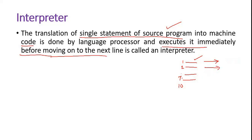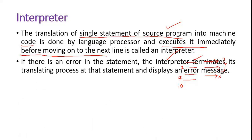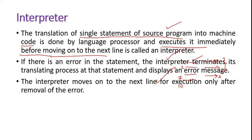Say there is an error at the seventh line — it will display the error. We have to rectify the error, then it reads the eighth line, ninth line. Unlike the compiler where the entire program is compiled and all errors are displayed at once, in an interpreter up to the sixth line the code is converted to machine level language. If there is an error in a statement, the interpreter terminates its translating process and displays the error message. It moves to the next line only after removal of the error.